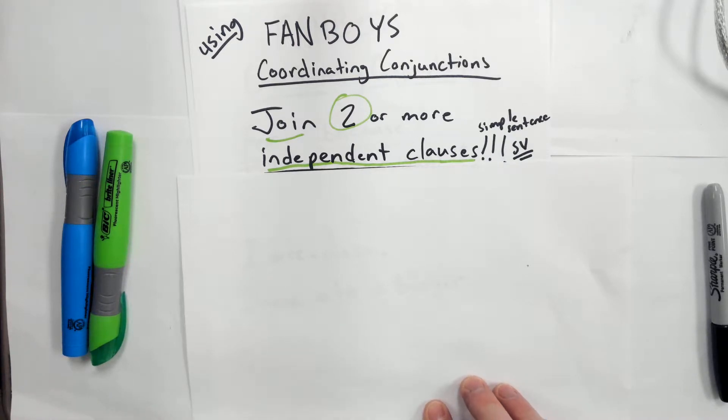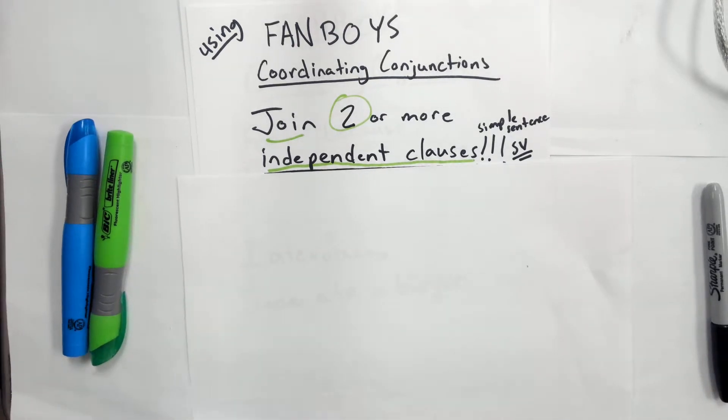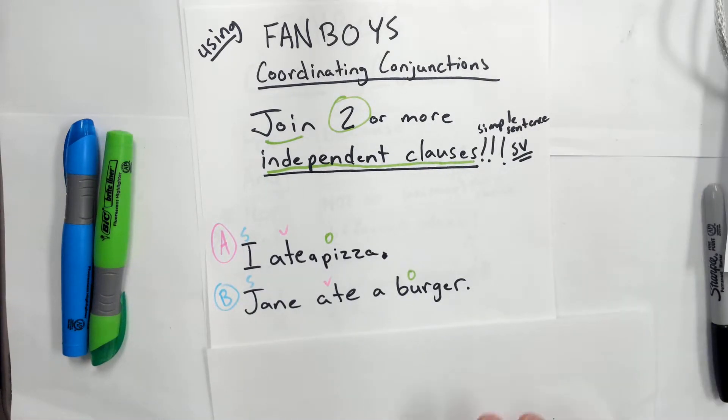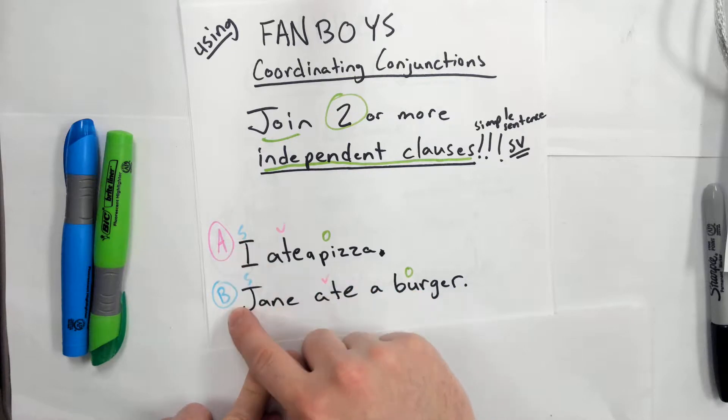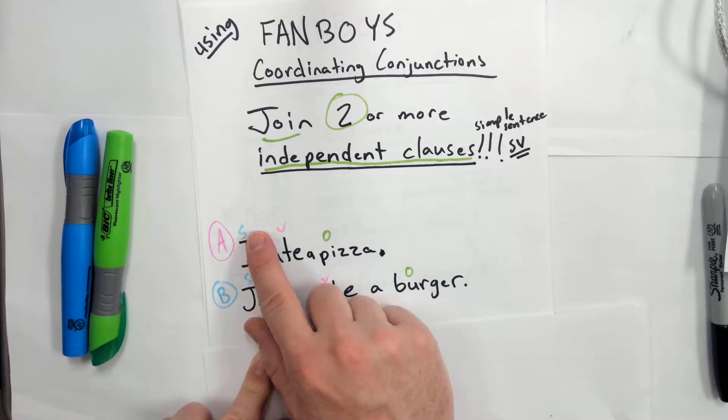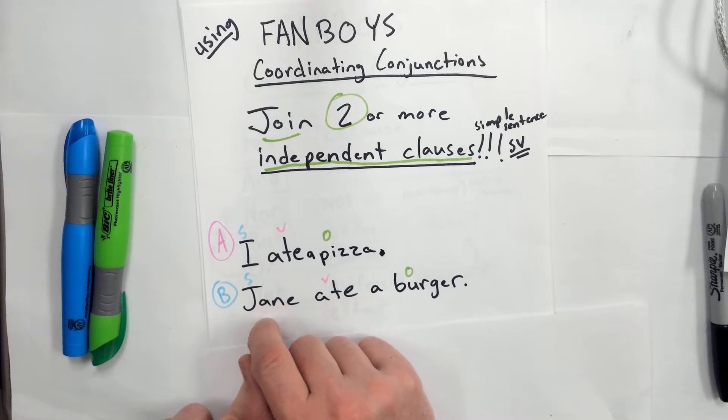Let's look at a couple examples. We can say 'I ate pizza.' 'Jane ate a burger.' Each of these is a simple sentence, an independent clause, because it has a subject and a verb.